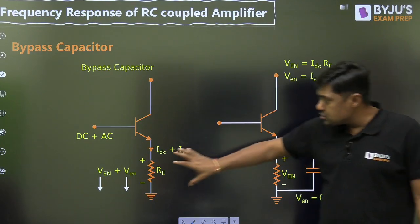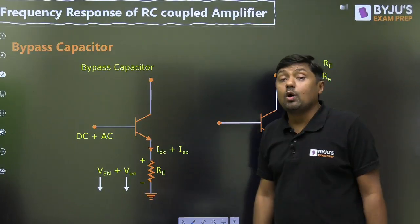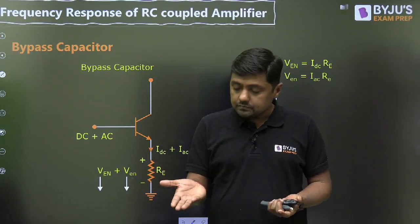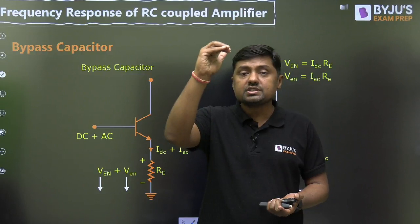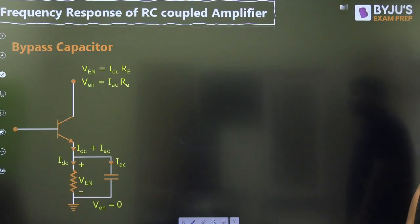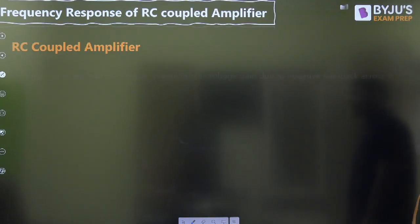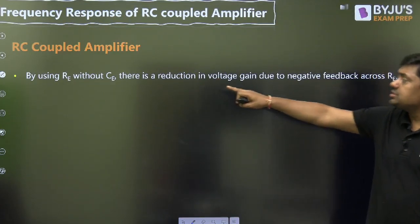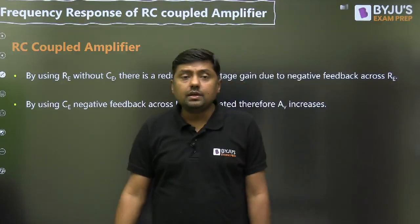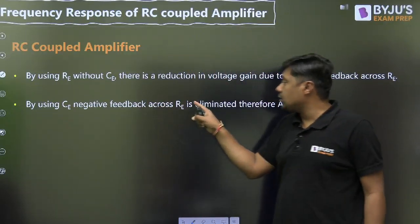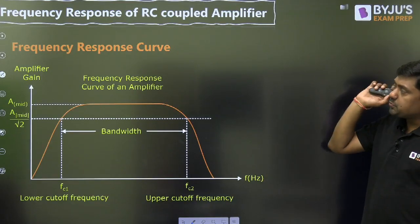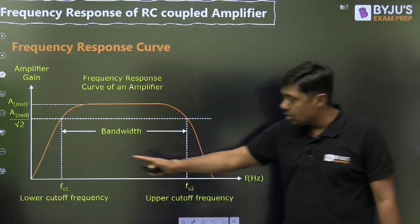If there is no capacitor and we connect a capacitor parallel to RE, negative feedback during AC analysis is removed. Therefore, voltage gain will increase and input resistance will decrease. By using RE without C, there is a reduction in voltage gain due to negative feedback across RE. By connecting the bypass capacitor, negative feedback across RE is eliminated, therefore AV increases. This is the final frequency response curve of an amplifier — FL is the lower cutoff frequency and FH is the higher cutoff frequency. Low frequency response is high pass filter; high frequency response is low pass filter.